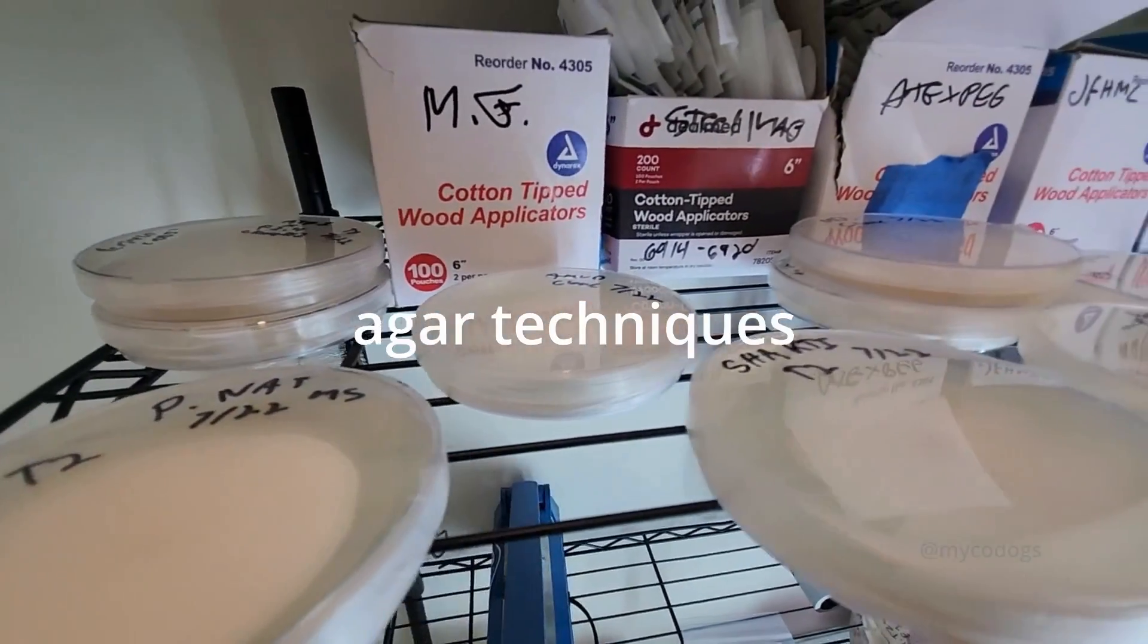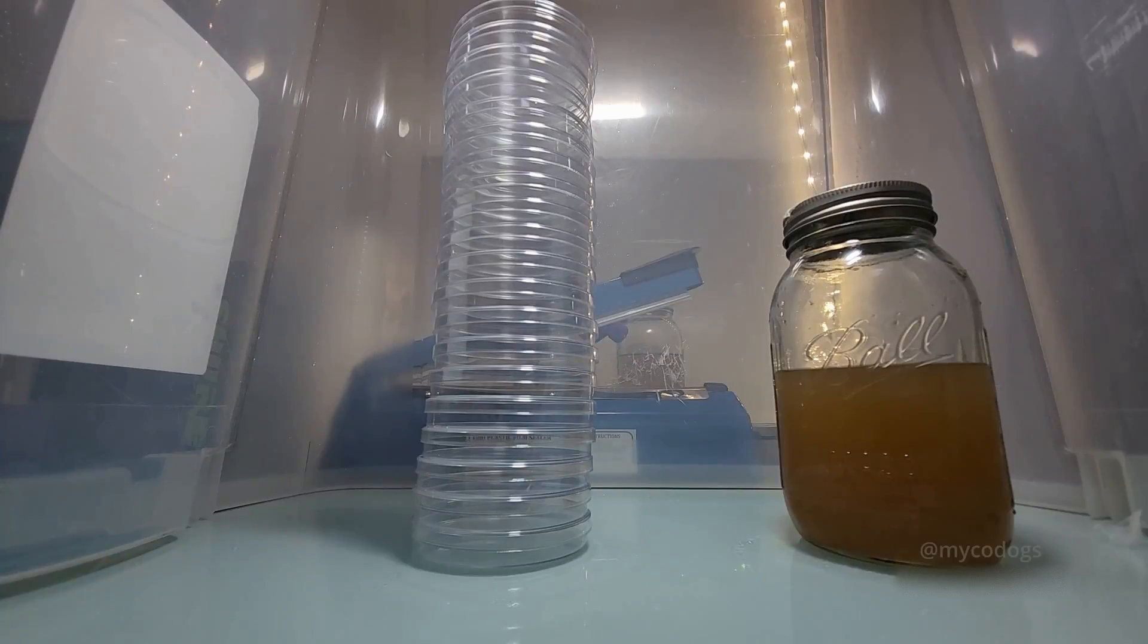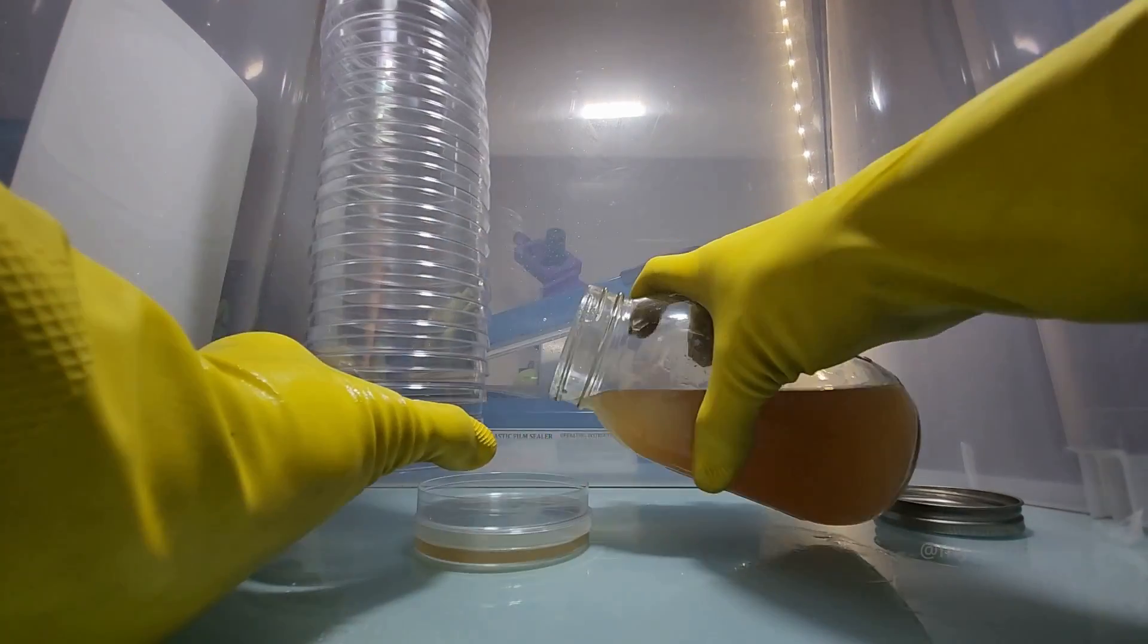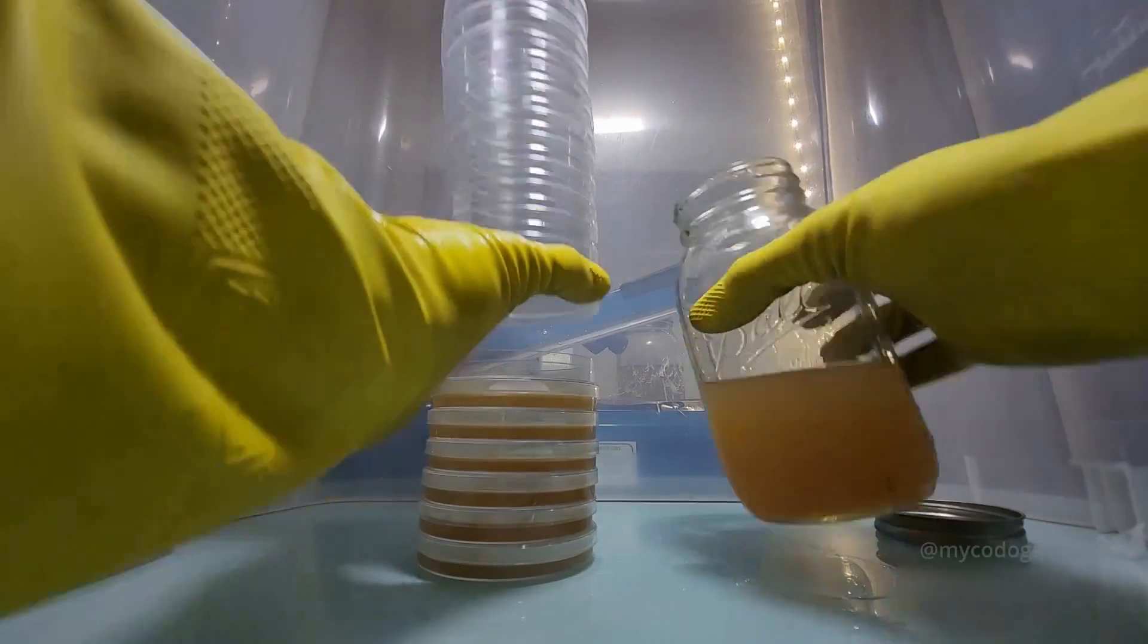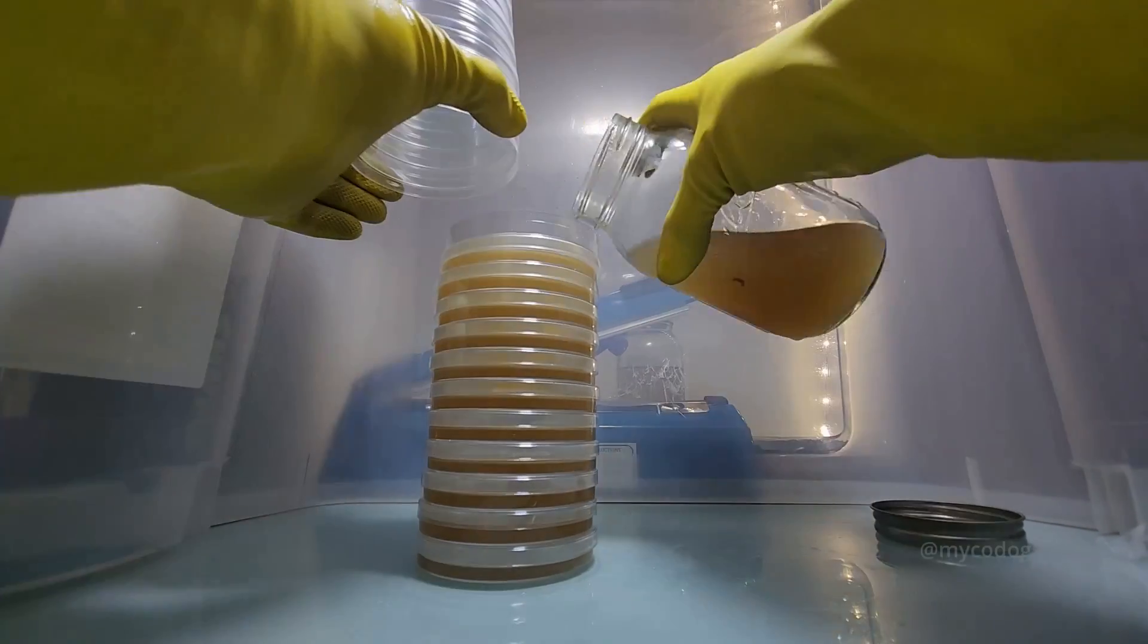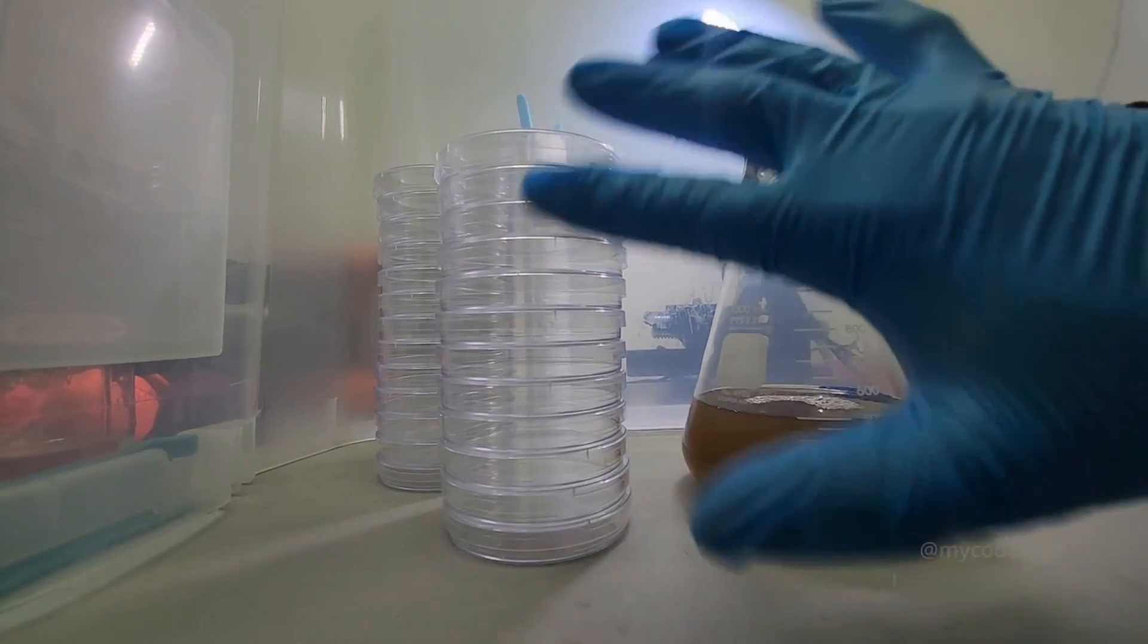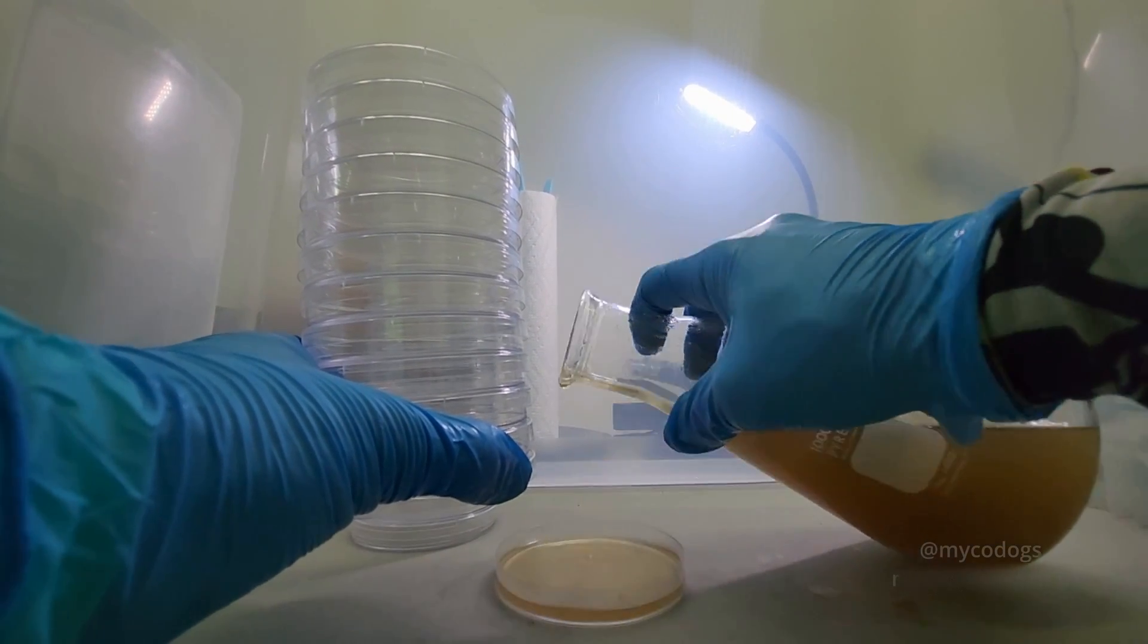I'd like to go over some more specialized techniques when working with agar starting with pouring the plates. When you pour the plates it's good to allow the media to cool down inside of the still air box. This serves two purposes. This allows the media bottle to cool in a sanitary location which helps prevent contamination from ingress of surrounding air due to vacuum formation. It's good to pour consistently and quickly. You don't want to be hovering over the dish for a long time or opening and closing it. As I mentioned earlier, a taller still air box makes pouring the agar hundreds of times easier.